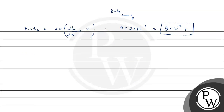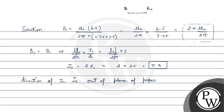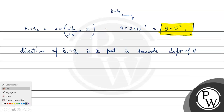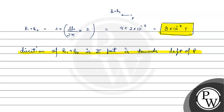Let us highlight the final answers. From part one: i2 was found to be 5 ampere, and its direction is out of the plane of paper. From part two: the direction of B1 plus B2 is towards the left of P, and the magnitude is 8 times 10 to the power minus 7 tesla. This was all about this solution — I hope you understood it well. Thank you.